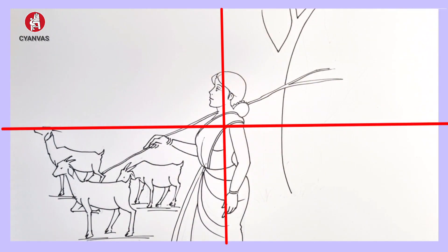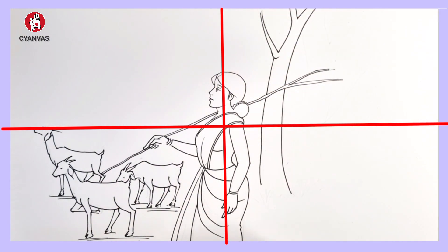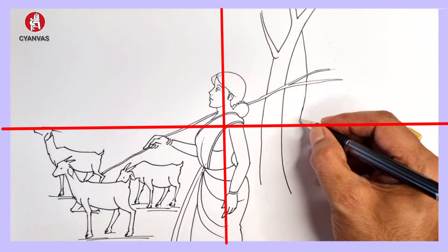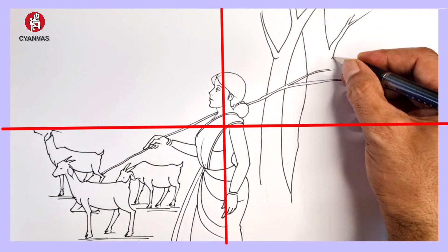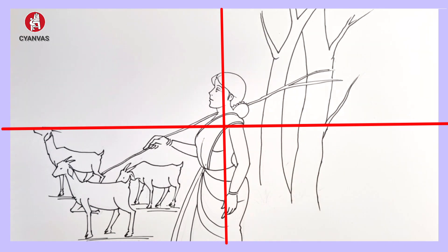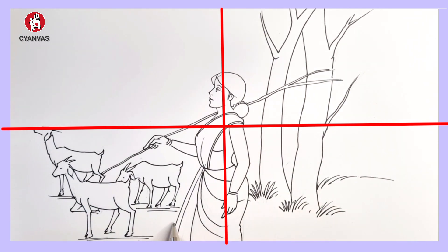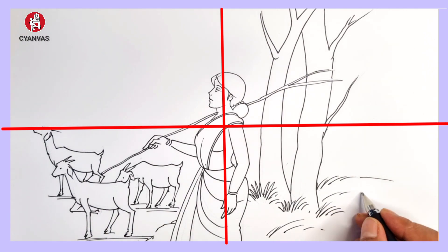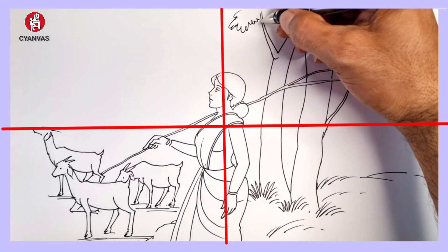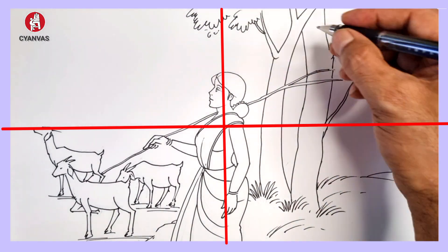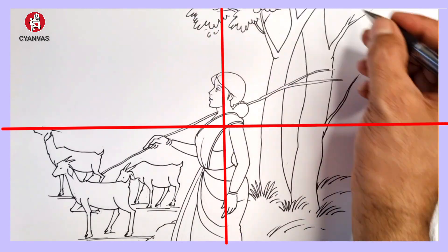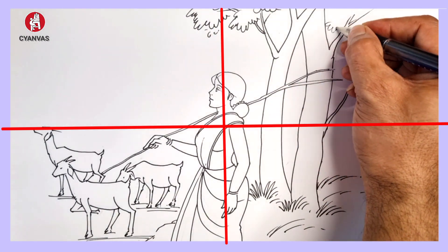Now we have to complete the background. If you want to change the background, you can change it. There are a total of four figures here. If you want to add something of your choice, you can add it.